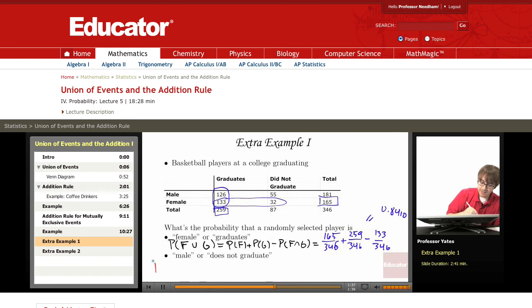What about the probability that they're male or maybe we'll call it G complement? Because they do not graduate. Well, this is the probability that they're male plus the probability of G complement minus the intersection of those two.